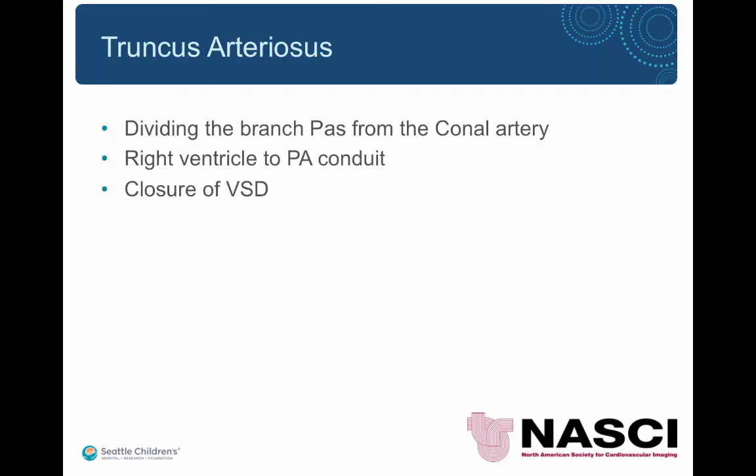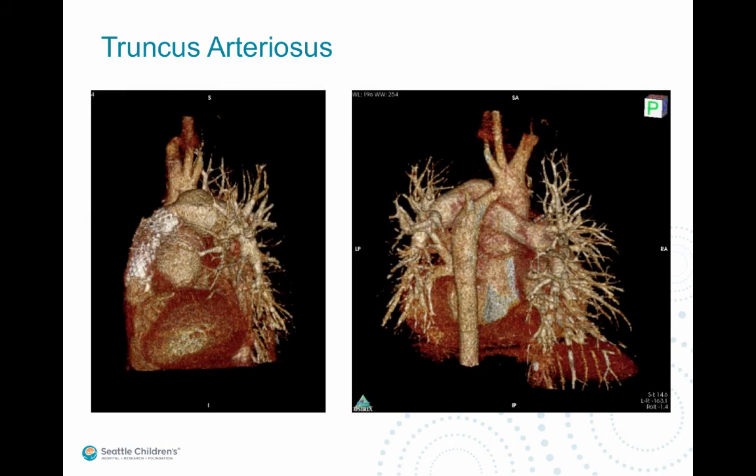For truncus arteriosus, the surgical options are division of the branch pulmonary arteries from the truncal artery, placement of a right ventricle to PA conduit, and closure of the VSD. Here's a 17-year-old with history of truncus arteriosus status post placement of an RV to PA conduit with conduit stenosis, with multiple metal stents placed to relieve the obstruction.